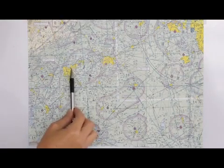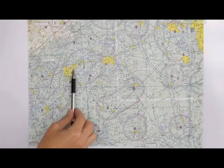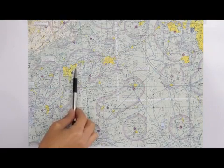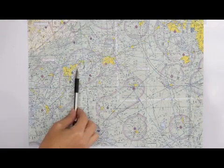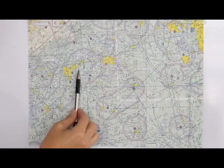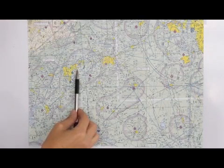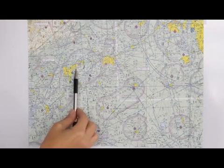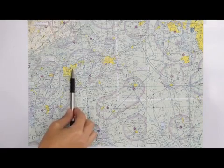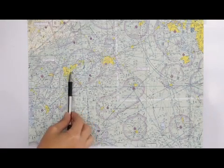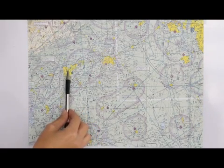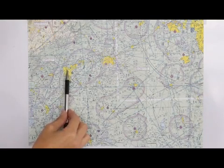Next is the ASOS, Automated Surface Observation Service. You'd put 127.07, but we don't have the third digit in our airplane, so you can ignore that 5. 127.07 is the frequency you would use to listen to the weather here at the airport. And the third line is the elevation. This airport is 1,048 feet above sea level.